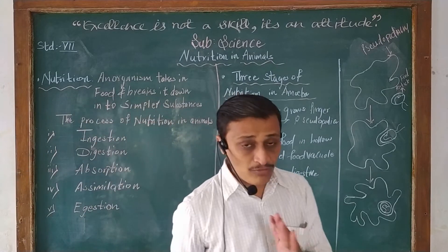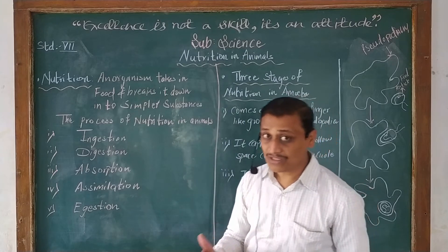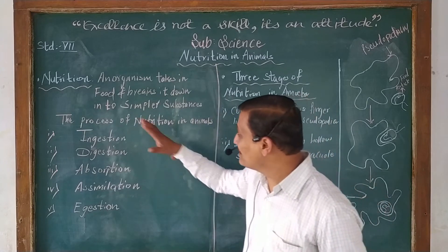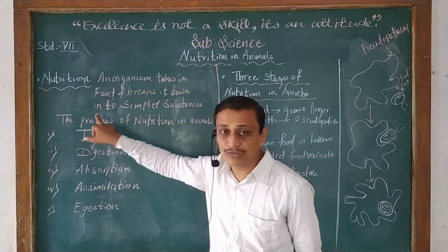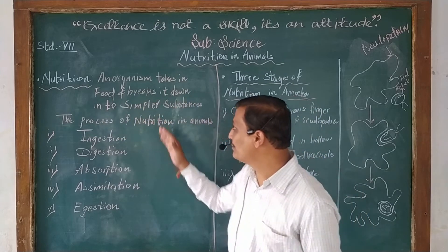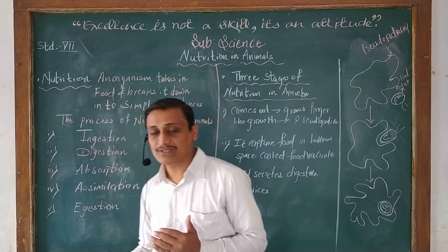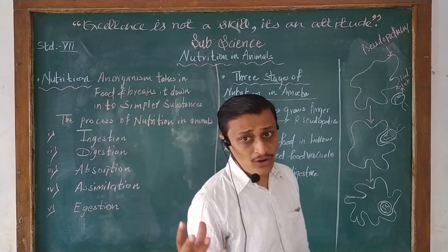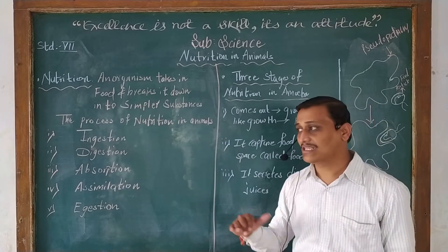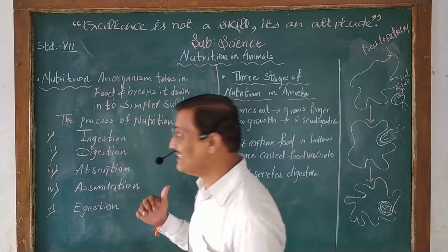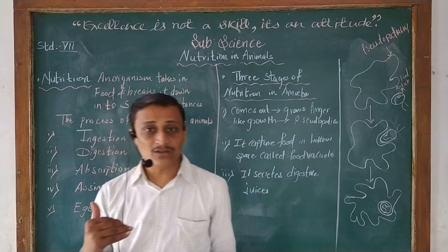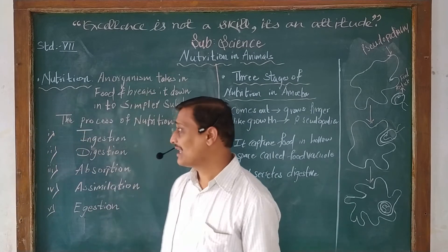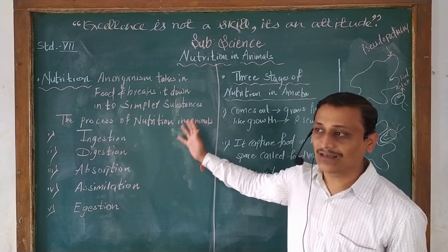The definition of nutrition from the previous chapter: nutrition is that process in which an organism takes in food and breaks it down into simpler substances. The same definition we carry forward here. Now, the process of nutrition occurs in five stages in animals.